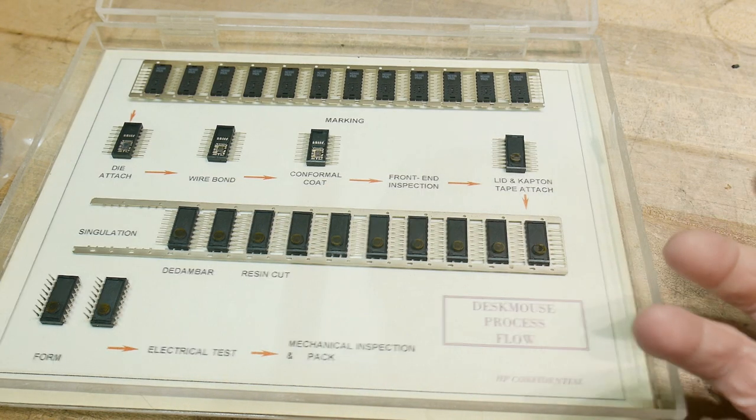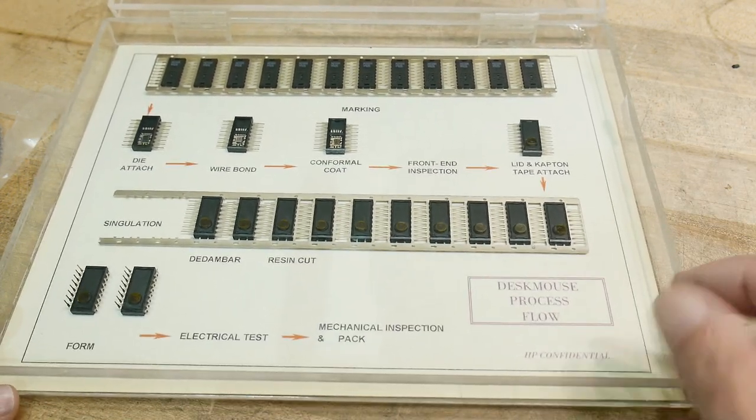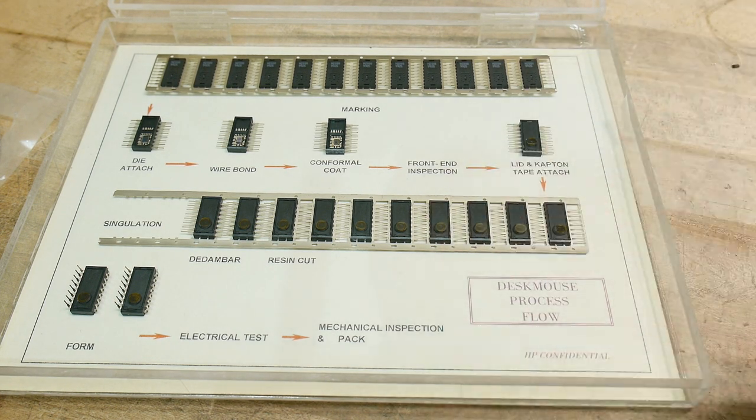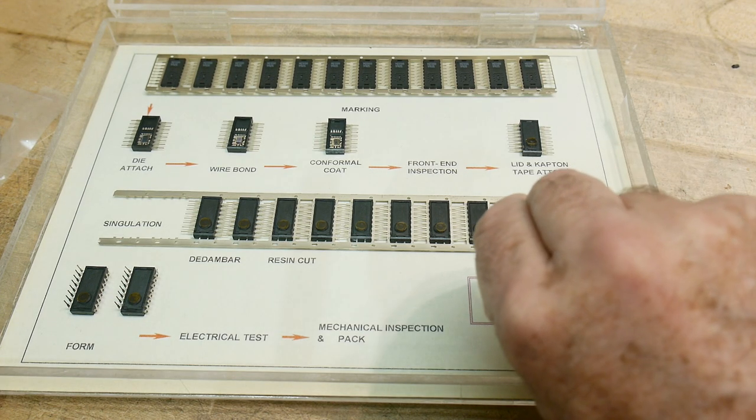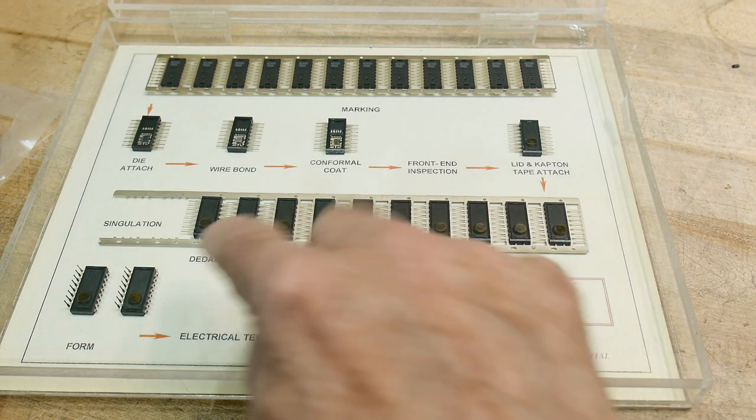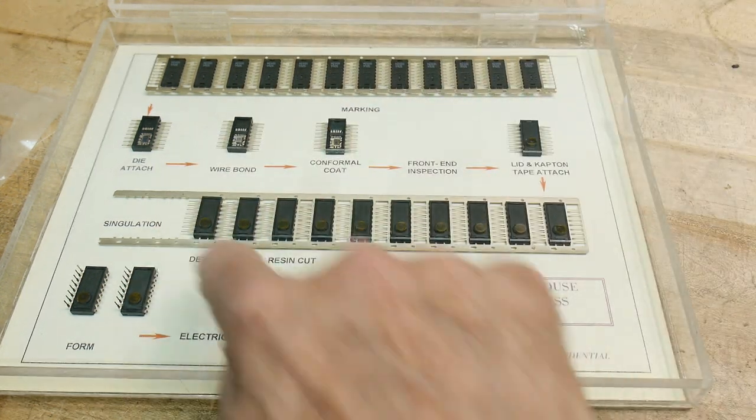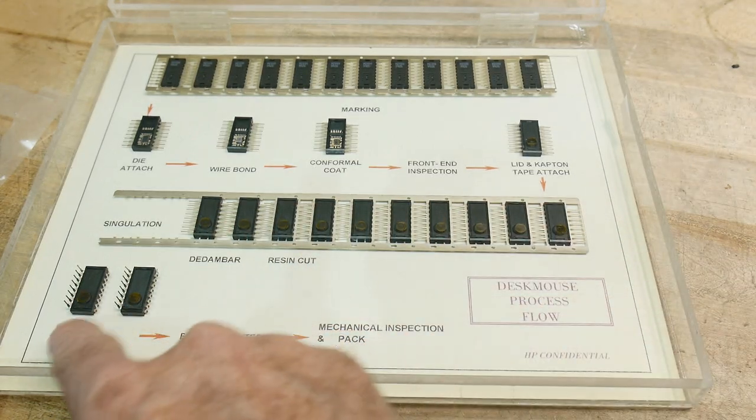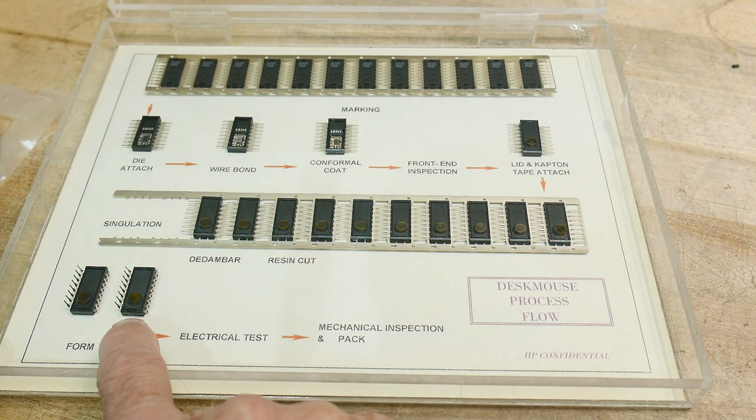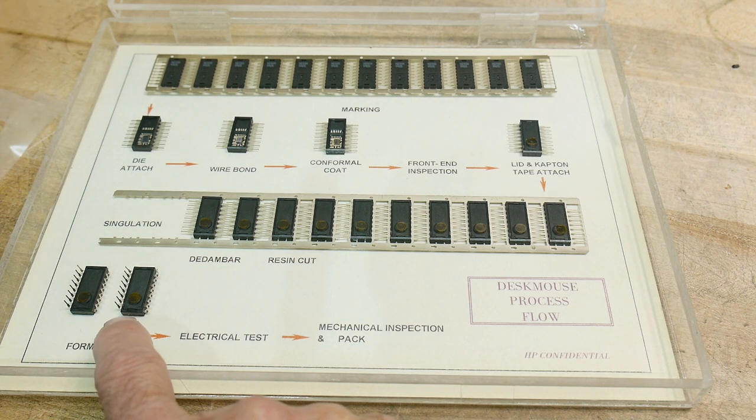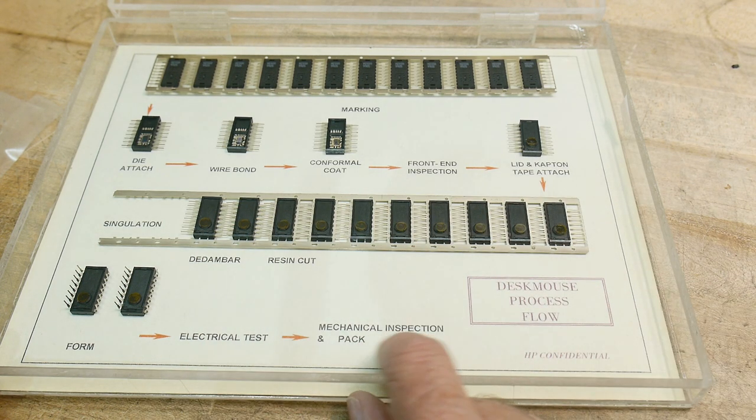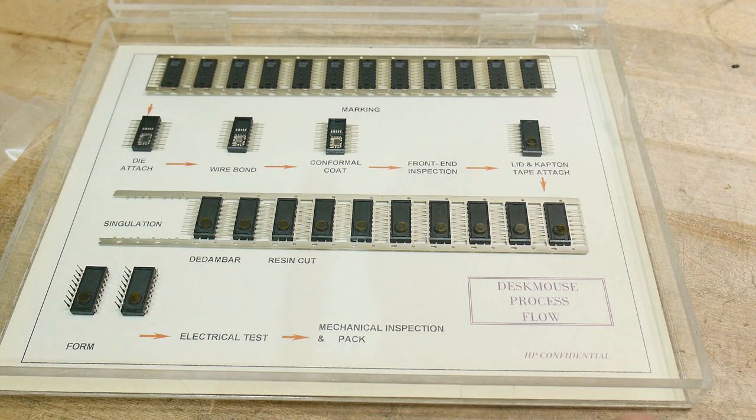So when you receive these things, if you purchase these to build mice, they would have that little Kapton tape covering the hole. Once you assemble it into your mouse, you need to remove that Kapton tape, otherwise it doesn't work. And then it goes into a punch, and then all of the parts are separated. And then they go into a different press, and all the leads are bent into the regular shape you're used to. And then it goes through an electrical test, and then it gets inspected again and packaged up and sent out to the distributor.